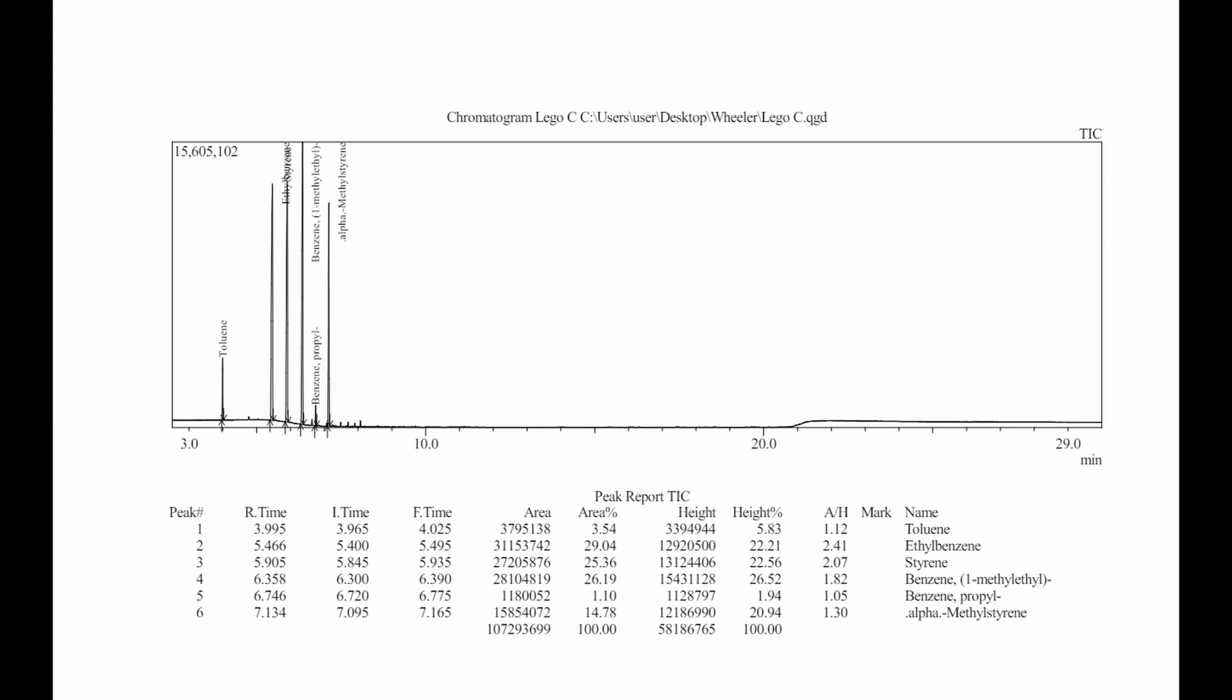The third distillate is composed of four main products, with trace amounts of toluene still present. This residual toluene could just be due to a couple factors. Some of it may have been still left in the condenser, or it could be part of an azeotrope formed during the distillation process.